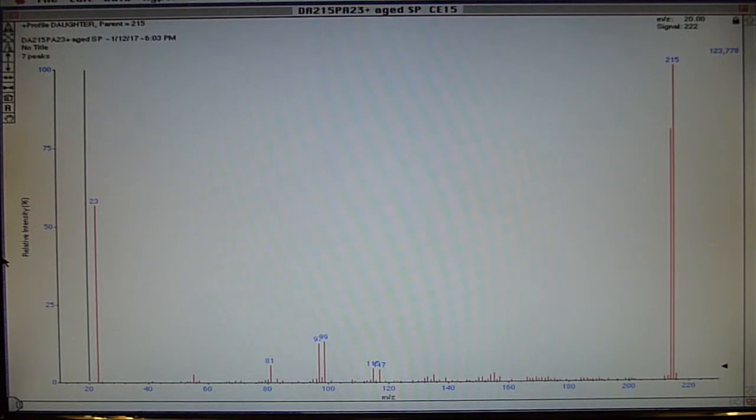Now one way of determining this is a sodium adduct is by doing a Q1 let in an ion and Q3 scans and then if you can scan down to 23 you've got a sodium adduct. Another way is to do a precursor ion scan and that's what this video is primarily about.